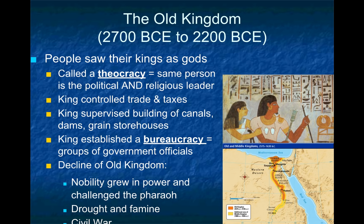The government was very centralized during this time. The king controlled not only religious leadership but also the economy — he dictated trade networks and collected taxes. He also supervised the building of infrastructure throughout the empire, so if there were canals, dams, or agricultural organization like grain storehouses — places to store a surplus of food — all of this was controlled by the king.